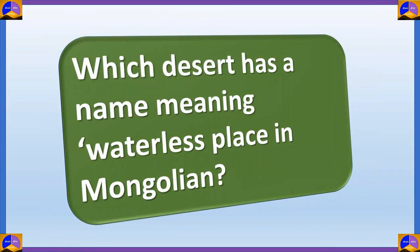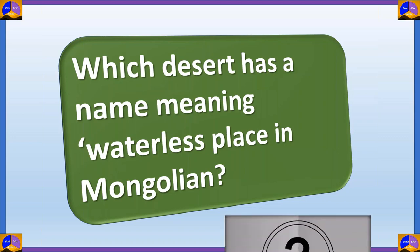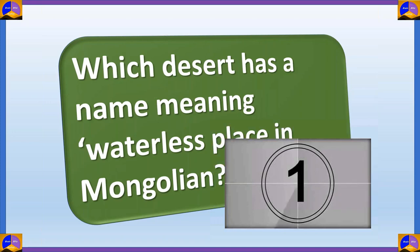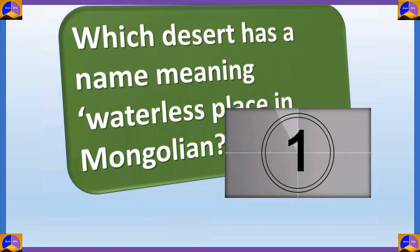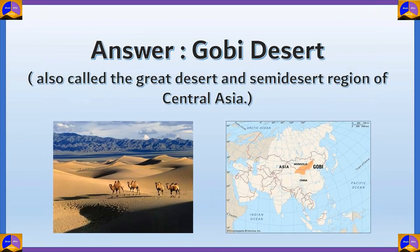This is the last question of this set. Which desert has a name meaning waterless place in Mongolian? Can you guess? The answer is the Gobi Desert, also called the Great Desert — a semi-desert region of Central Asia.